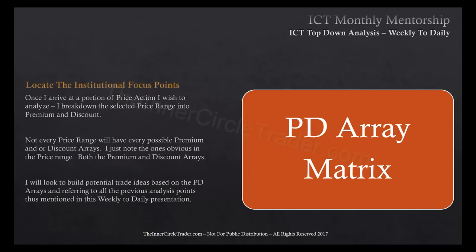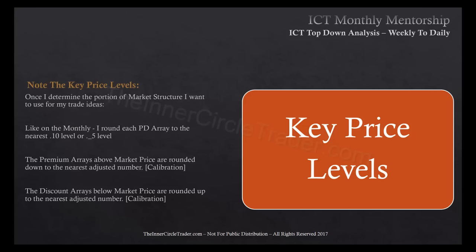Then I locate institutional focus points. Once I arrive at a portion of price action to analyze, I break it down into premium and discount. Not every range will have every possible array — I note only the obvious ones on the weekly. Both premium and discount arrays are identified, and I build potential trade ideas based on PD arrays referring to all previous analysis points. For key price levels, I round each PD array to the nearest 10 or 5 level. Premium arrays above market price are calibrated and rounded down; discount arrays below are calibrated and rounded up.